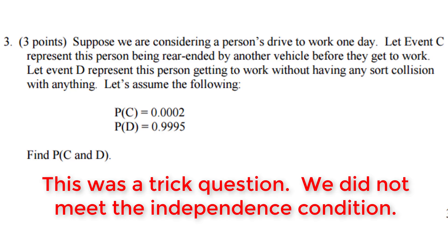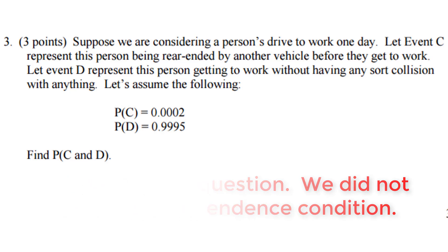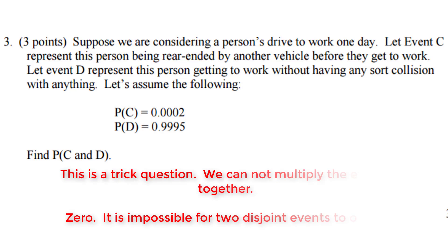Because we do not meet the rule of independence, we cannot simply multiply these events together. Some great answers to this question could be this is a trick question. We can't multiply these events together. Another answer could be zero, because it is impossible to get to work without a collision and to also get rear-ended on the way to work.